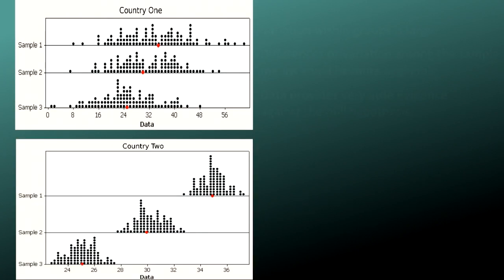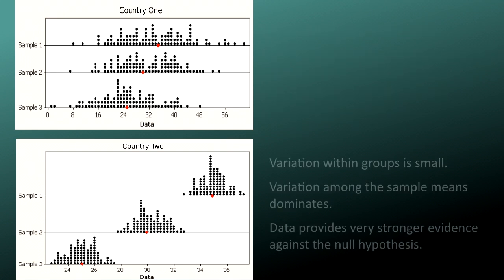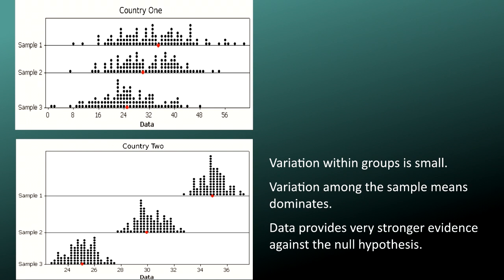When the variation within groups is large, like in country 1, the differences or variation among the sample means could become negligible, and the data would provide very little evidence against the null hypothesis. When the variation within groups is small, like in country 2, the variation among the sample means dominates, and the data have stronger evidence against the null hypothesis. Looking at the ratio of variations is the idea behind comparisons of means, thus the name analysis of variance.